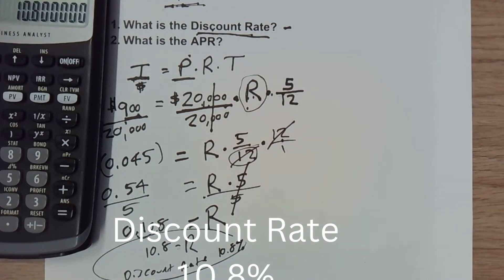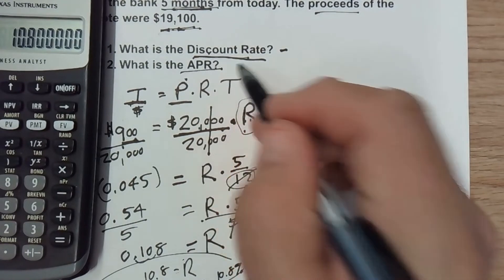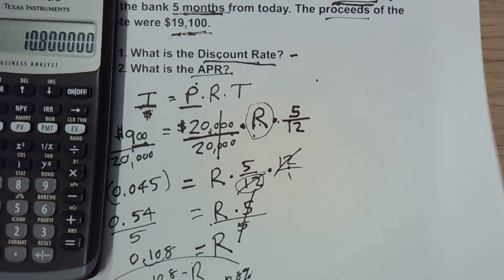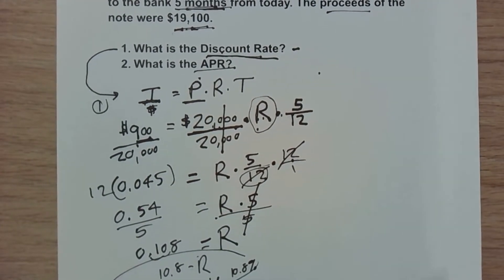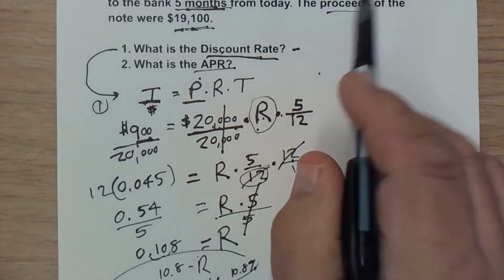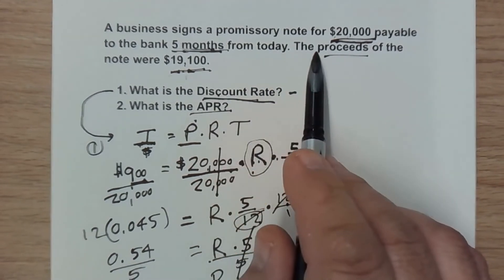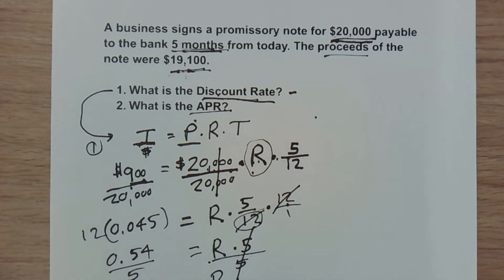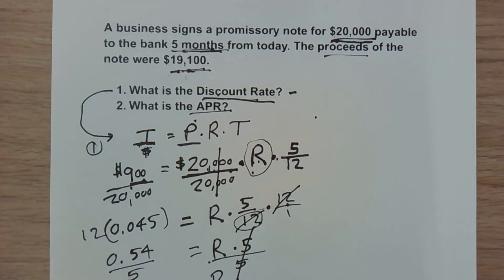Now we're also asked for the APR — Annual Percentage Rate. That's the effective rate, the actual real rate you're paying. As you may see in any loan documents, it will usually tell you the APR. The APR is a more accurate rate. Part of the reason it differs is because we're not actually getting a full $20,000 as proceeds — we're only getting $19,100; we're prepaying the interest, and that timing impacts the rate. We expect the APR to be higher than the discount rate, because we're paying interest on a smaller amount that was actually received as proceeds.